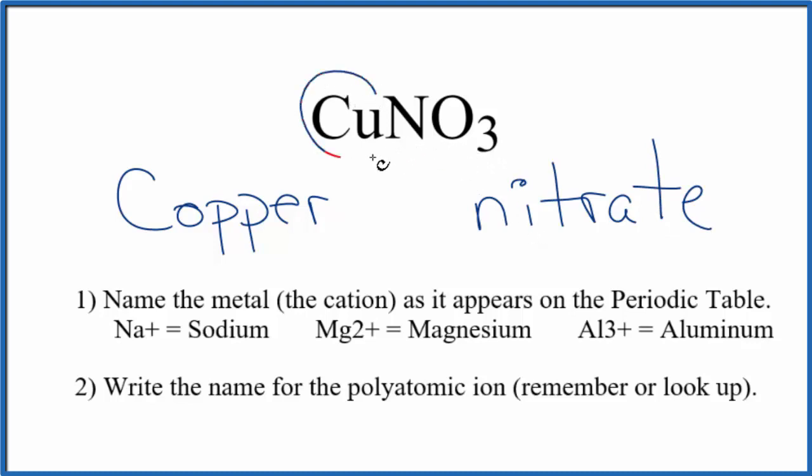But we said that copper is a transition metal, so it can have a different charge depending on what it's bonded to. Here it's bonded to the nitrate. Because of that, we have to write something in the middle here to show what the charge on the copper is.